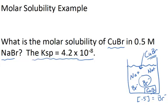So the first thing you want to do then is write down the equation. Copper 1 bromide will dissolve to a limited extent to give copper ions in solution and bromide anions in solution. That's your reaction.